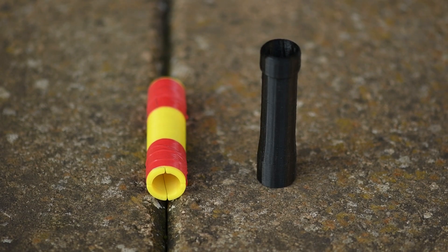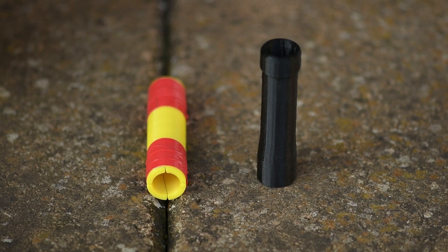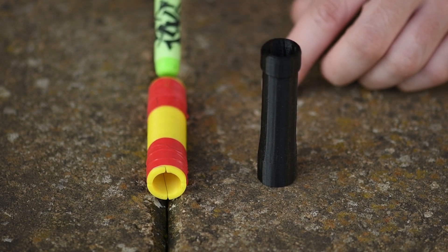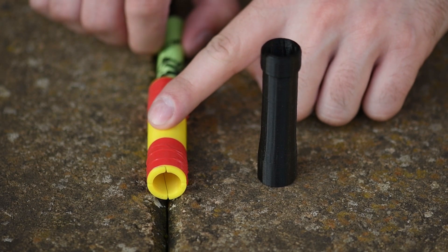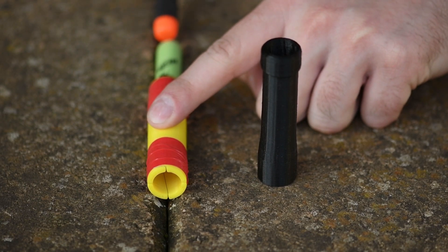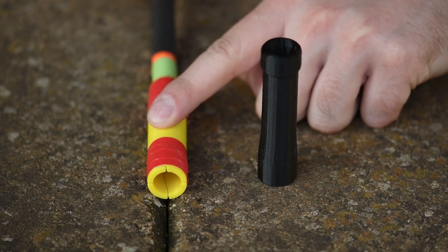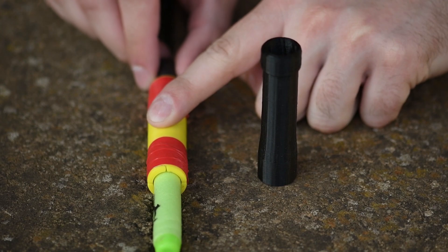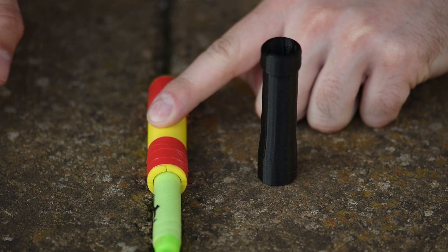First up I'm going to try the scar barrel and I'm going to use the standard elite dart. This is a green zombie strike dart and you can see I'm positioning the zombie strike logo upwards. As I push the dart through you can see it's rotated 180 degrees so now the zombie strike logo is down.